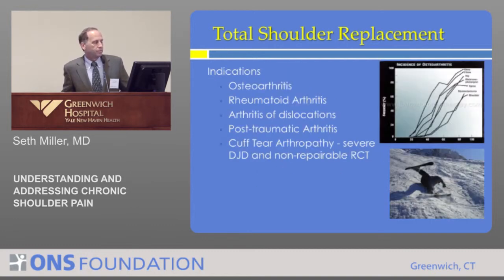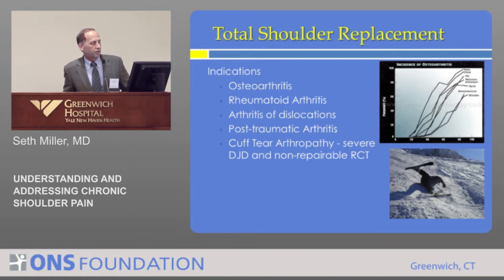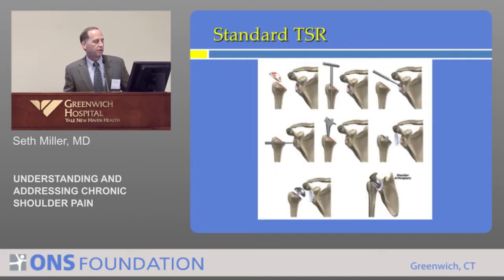The reasons we do the operation: osteoarthritis is clearly the most common, and the incidence of osteoarthritis in all major joints clearly increases with age. There are other types — inflammatory or rheumatoid arthritis, arthritis from recurrent dislocations, people who have had fractures causing post-traumatic arthritis, or chronic severe rotator cuff tears. All of these can lead to degeneration of the joint and the need for replacement.